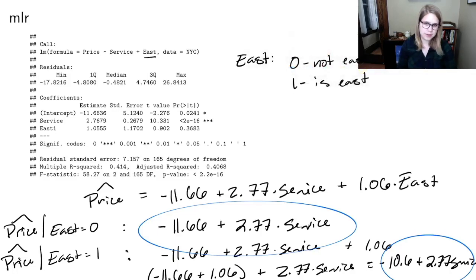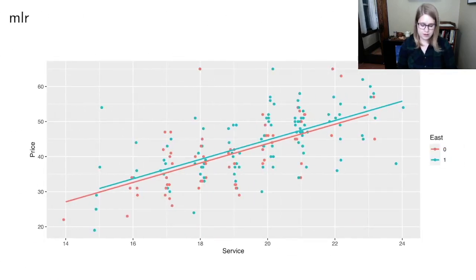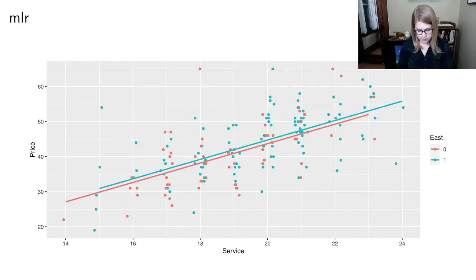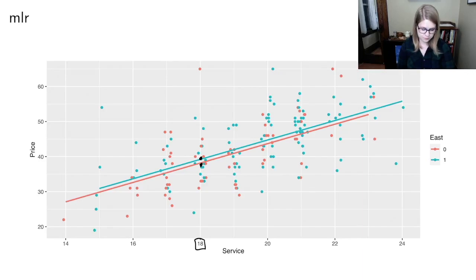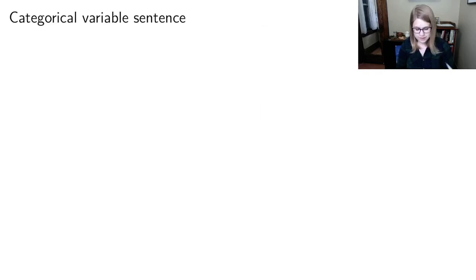This is something I might ask you to do on an exam — write out the two versions of the regression line for the two categories, or maybe more than two categories for a particular variable. Here I have my two parallel lines on my ggplot, one for zero and one for one. You can see they both have the same slope but slightly different intercepts, and restaurants east of Fifth Avenue have slightly higher prices on average.